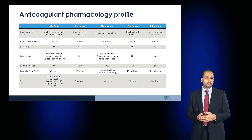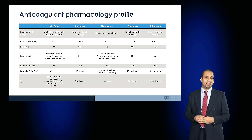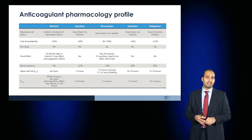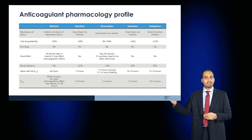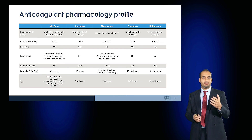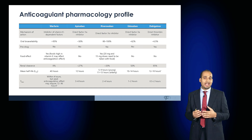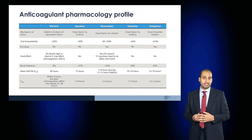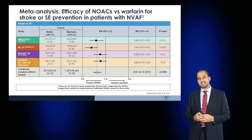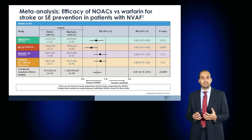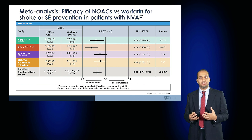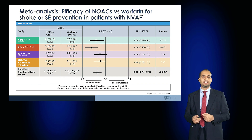Regarding mechanisms of action: warfarin is a vitamin K inhibitor, whereas apixaban, rivaroxaban, and edoxaban — which contain 'xa' in their names — are direct factor Xa inhibitors. Dabigatran is a direct thrombin inhibitor. Notably, rivaroxaban at higher doses should be taken with food to achieve the desired therapeutic effect. A meta-analysis by Ruff et al. demonstrates that as a class, NOACs are efficacious compared to warfarin for preventing stroke or systemic embolism in patients with non-valvular AF.